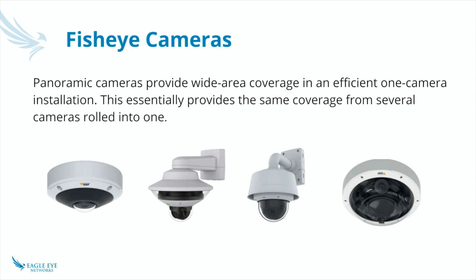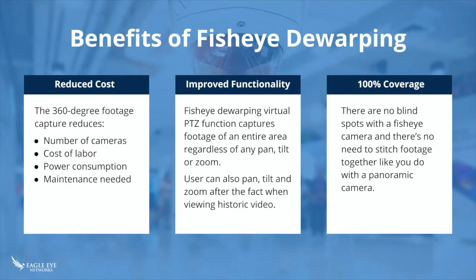What are the benefits of fisheye dewarping? Number one, you reduce the number of cameras required to cover the same area, which cuts the cost of labor, less power consumption, and less maintenance because you maintain one camera instead of three or four. And it gives you that 360-degree capture of everything.